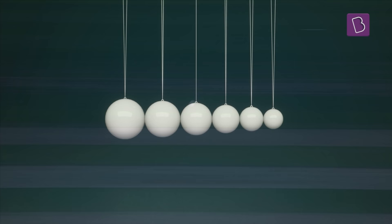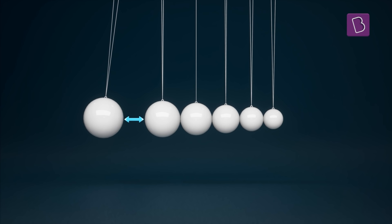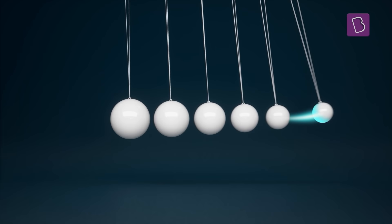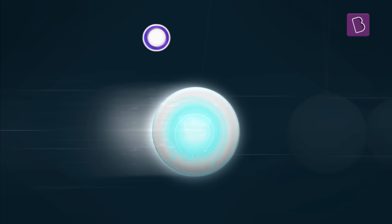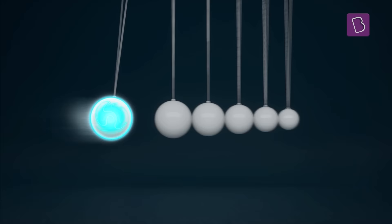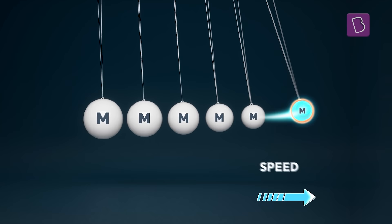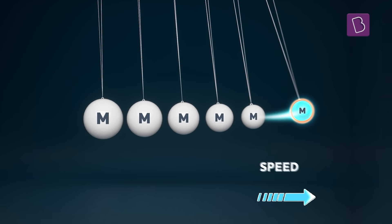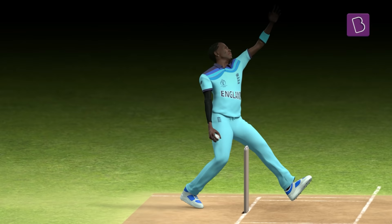To understand what happens within the bowler's body, let's observe a tapered Newton's cradle. Notice how a slight movement of the largest sphere sends the smallest sphere flying off at a much greater speed. Any mass in motion has momentum, whose value is the product of its mass and speed. As this momentum gets transferred along the cradle through balls of reducing mass, the speed attained by the smallest sphere is much greater than the speed of the largest sphere.